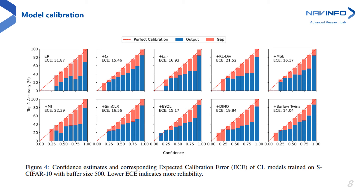Enforcing consistency has several other benefits, including model calibration. The figure shows the expected calibration error along with a reliability diagram on sequential CIFAR-10. A lower ECE value represents better calibration in the underlying models. ER is highly miscalibrated and far more overconfident than models trained using a regularizer. All regularizers added on top of ER improve model calibration. Stricter consistency constraints have better calibration, even reducing the ECE score by half in most cases. Consistency regularization ensures that predicted softmax scores are better indicators of the actual likelihood of a correct prediction, thereby improving the reliability of ER in real-world applications.